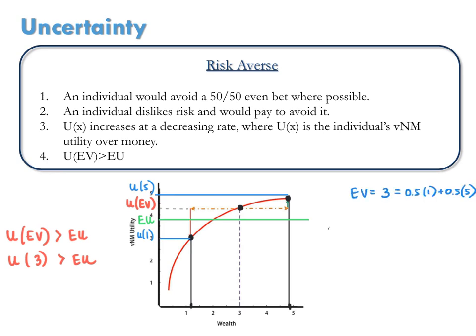For those who picked option 1, option 1 was more attractive because how the consumer feels about getting the $3 is more than how the individual feels about the uncertain lottery itself. For risk-averse people, the utility of a lottery's expected value is greater than the expected utility of the lottery itself.